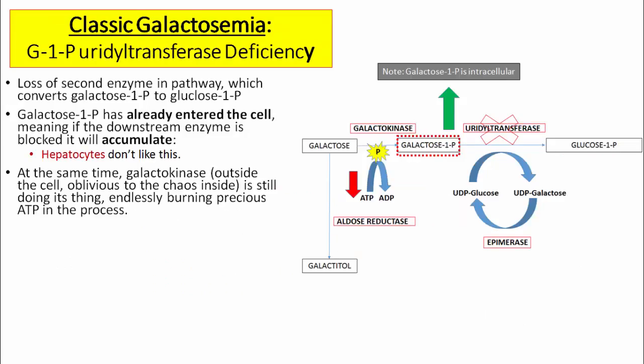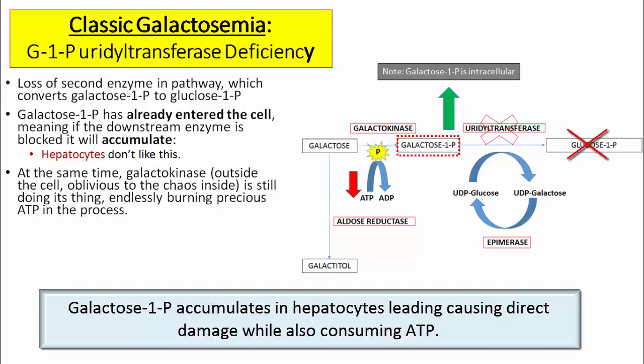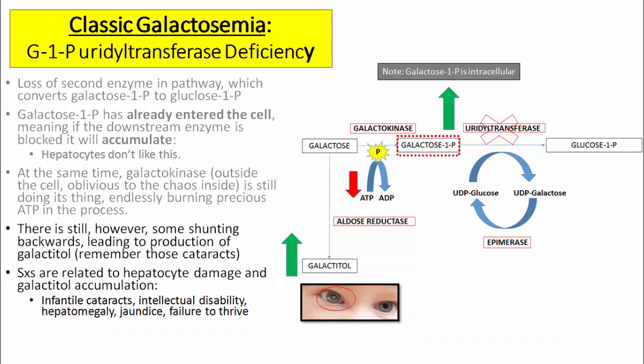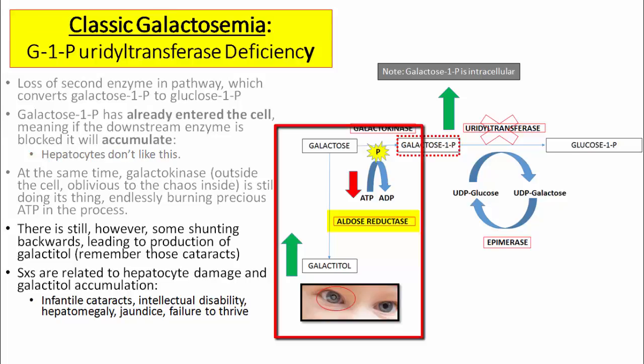The second disorder is classic galactosemia, involving a deficiency of the enzyme uridyl transferase, also called galactose-1-phosphate uridyl transferase. This means galactose-1-phosphate cannot be converted to glucose-1-phosphate. Because galactokinase upstream is intact, knocking out uridyl transferase causes galactose-1-phosphate to accumulate inside the cell, resulting in significant damage to hepatocytes. Meanwhile, galactokinase outside the cell continues functioning at high capacity, endlessly burning precious ATP. There is still some accumulation of galactose outside the cell, which activates the secondary pathway, leading to accumulation of galactitol and development of infantile cataracts.